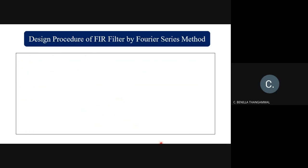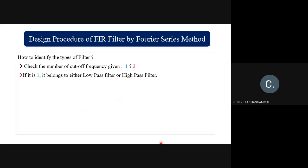The trick is how to identify the filter type if it is not mentioned. From the Hd(e^(jω)) given in the problem statement, check how many cutoff frequencies are given — either one or two. You have four filter types: low pass, high pass, band pass, and band stop. If the number of cutoff frequencies is one, it belongs to either a low pass filter or a high pass filter.